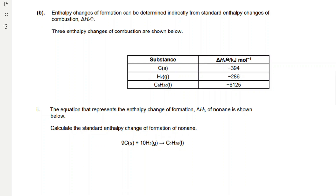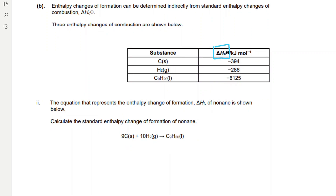We need to draw a combustion cycle because we have been given combustion values in the question, so the arrows need to face downwards. On the first arrow on the left, because we have nine carbon atoms in the equation, we need to multiply minus 394 (the enthalpy change of combustion of carbon) by 9, and we need to multiply minus 286 by 10 because we have 10 moles of hydrogen. Adding these values gives us minus 6406. For the second arrow on the right we have one mole of nonane, and the enthalpy change of combustion of nonane is minus 6125 kJ/mol, so we write minus 6125.